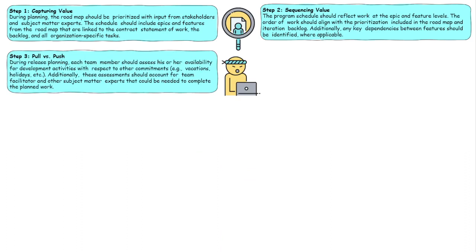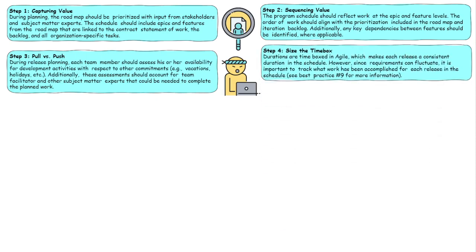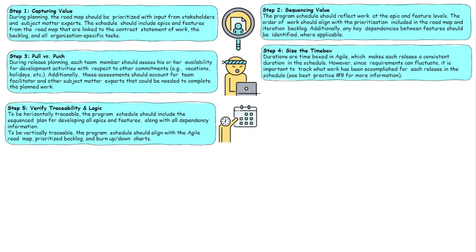Number three: push versus pull. In the world of traditional, we rely on assigning resources to tasks, but in the world of Agile we use a pull mechanism. What I mean by a pull mechanism is we pull the work to ourselves. Pushing work to people is a different mindset. When the work is pulled, you're taking ownership and you know that you can do the work, and you know that that work can be decomposed as appropriate. Number four: size the time box. When you're looking at work, the question is will it fit within the time box? It takes away the need for abstract scheduling like we do in the world of traditional.